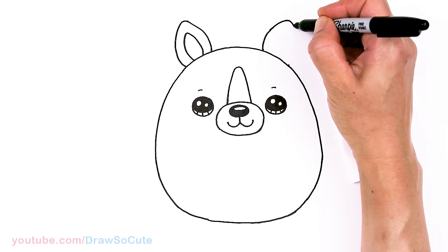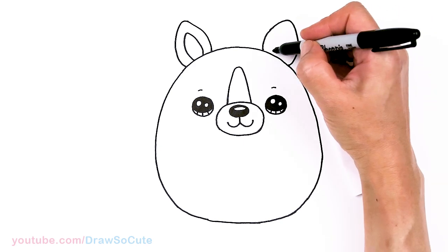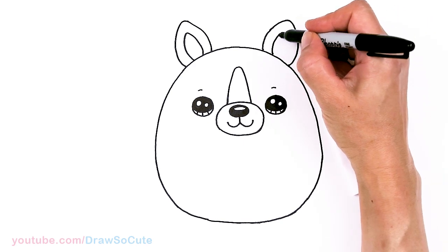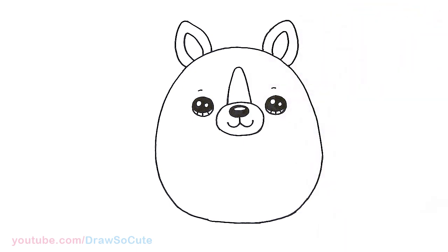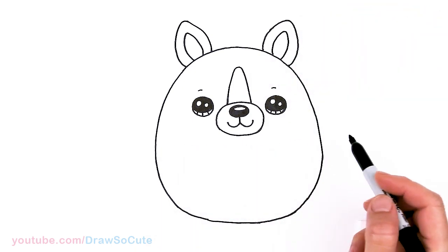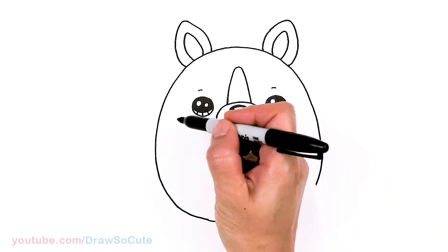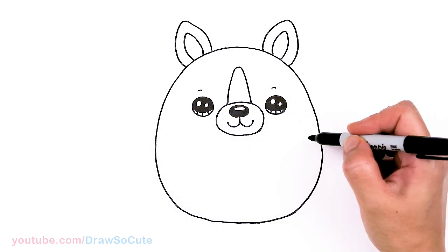And then just like the other side, bring it all the way back down. And the inside. From there, let's draw the cute bandana that this dog is wearing. So let's start with the knot first.